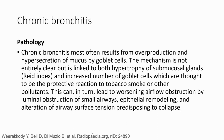Chronic bronchitis most often results from overproduction and hypersecretion of mucus by goblet cells. The mechanism is not entirely clear, but is linked to hypertrophy of submucosal glands and an increased number of goblet cells, which are known to be a productive reaction to tobacco smoke or other pollutants. This can in turn lead to worsening airflow obstruction by luminal obstruction, small airway epithelial remodeling, and alteration of airway surface tension predisposing to collapse.